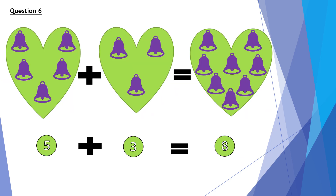Question 6. 5 bells plus 3 bells equals 8 bells. So in the number form, 5 plus 3 equals 8.